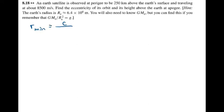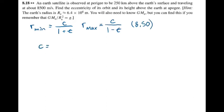We'll start with some equations from the chapter. The minimum radius — the radius at perigee — is equal to C over 1 plus the eccentricity of the orbit. And the maximum radius, the radius at apogee, is equal to C over 1 minus E, the eccentricity of the orbit. That's equation 8.50, where C is a constant with units of length equal to L squared — the angular momentum squared — over the gravitational constant times the reduced mass squared times the total mass.